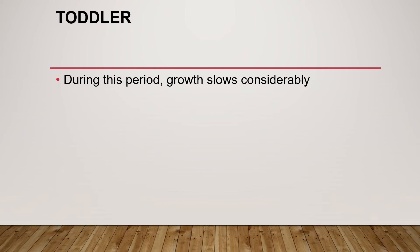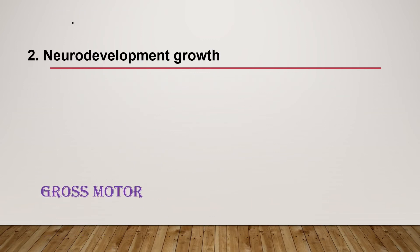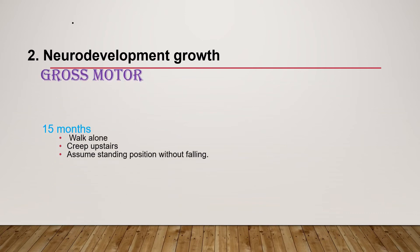Growth and development during the toddler stage, from one to three years: growth slows considerably. To estimate weight for a child between one to six years, multiply age in years by two and add eight. To estimate height, multiply age in years by five and add 18 centimeters. From one to two years, they increase in height by one centimeter per month, and head circumference increases by 10 centimeters from one to two years of age.